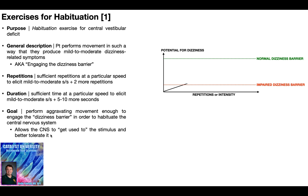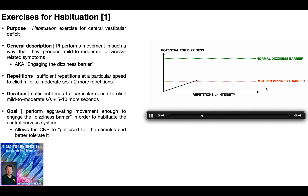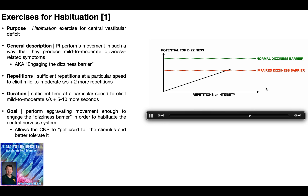To habituate means to get used to. We're allowing the central nervous system to get used to the stimulus or movement and to better tolerate it. As the person performs that movement more and more, their central nervous system gets used to it and they develop better tolerance. That dizziness barrier goes up and up until finally they no longer have an impaired dizziness barrier and are able to tolerate a movement that a normal, healthy person is able to.